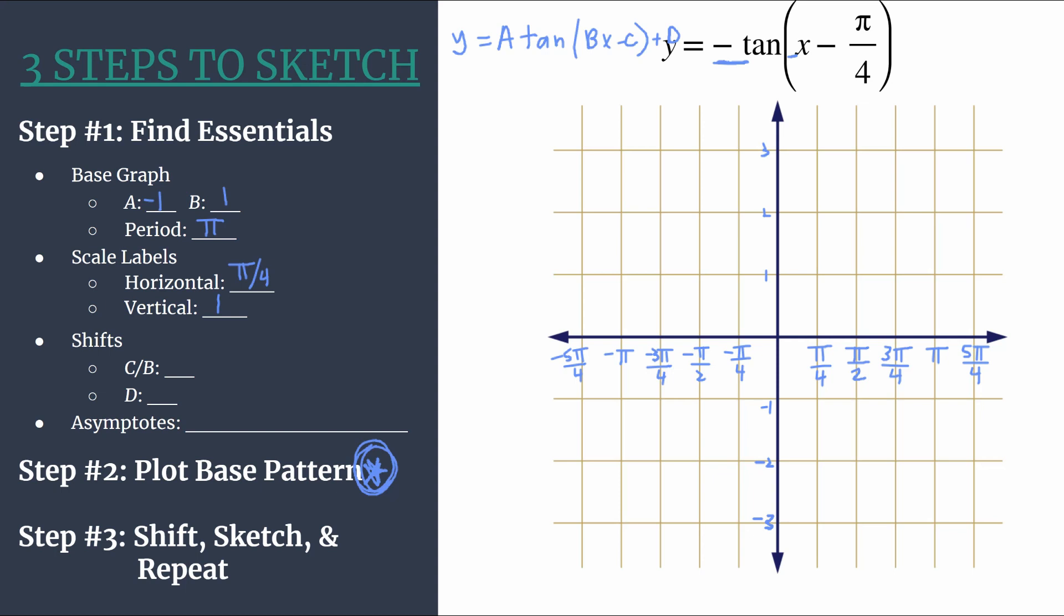Now we're ready to tackle the shifts. We can have two kinds of shifts. C over B will be our phase or horizontal shift, and D will be our vertical shift. It's pretty quick to see that we don't have any D term in this case, so we don't have any vertical shifting. D is an understood zero.